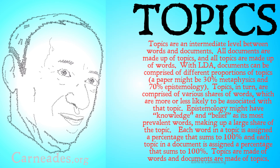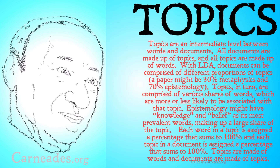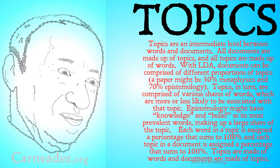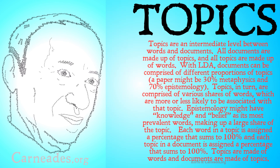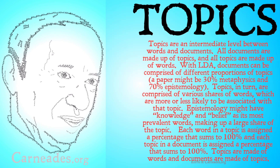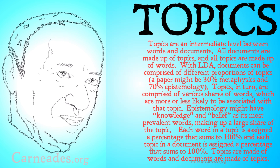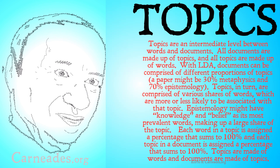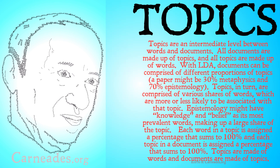Topics are an intermediate level between words and documents. All documents are made up of topics, and all topics are made up of words. With LDA, documents can be comprised of different proportions of topics. For example, a paper might be 30% metaphysics and 70% epistemology. The paper is the document; metaphysics and epistemology are the two topics, and the words within those topics are how we understand what the computer would be telling us — that this is probably something like metaphysics, and this is probably something like epistemology.